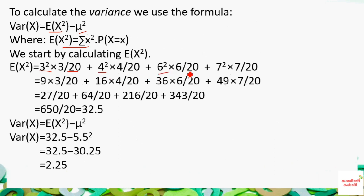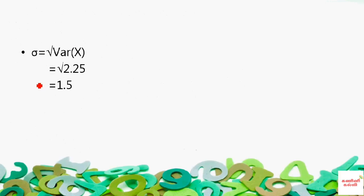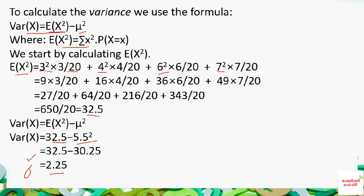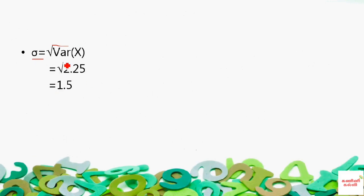Computing E(x²) = Σ x² · P(x): 6²×(6/20) + 7²×(7/20) and the other terms, simplified gives E(x²) = 32.5. Substituting into the variance formula: Var(x) = 32.5 − (5.5)² = 32.5 − 30.25 = 2.25. Standard deviation σ = √2.25 = 1.5.